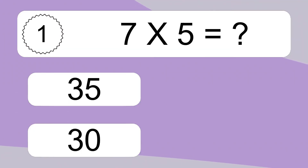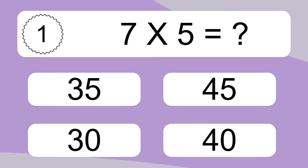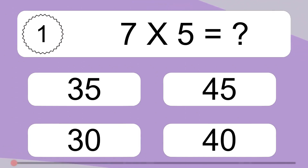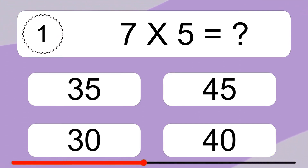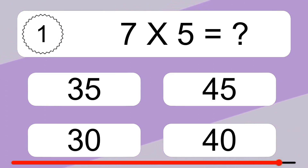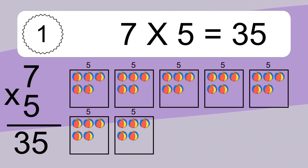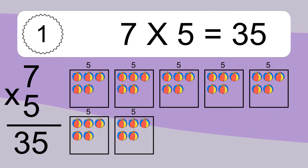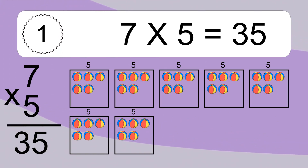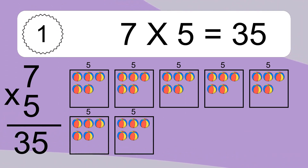7 times 5 equals what? 7 times 5 equals 35. We have 7 boxes, and each box has 5 colorful balls inside. If you count all the balls in all the boxes together, you will have 7 times 5 balls. This equals 35 balls.